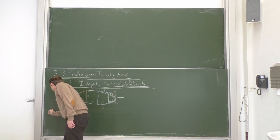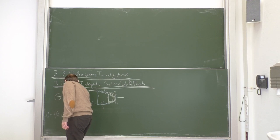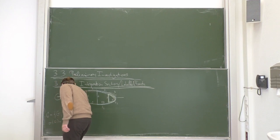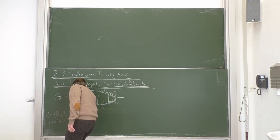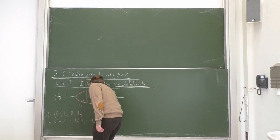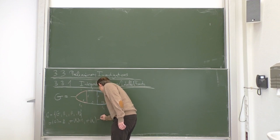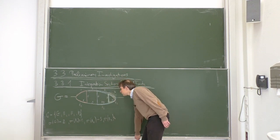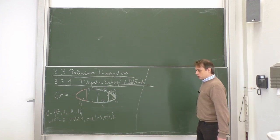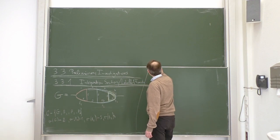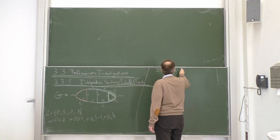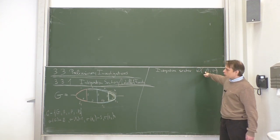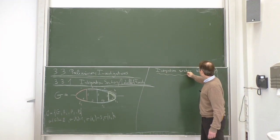The forest C contains G, H1, H2, H3 — four elements. The labels are: sigma(G) = 2, sigma(H1) = 1, sigma(H2) = 3, sigma(H3) = 4. We can now define our integration sector, curly D, which is defined by this labeled forest C and the labeling sigma. For each subgraph we get an inequality.